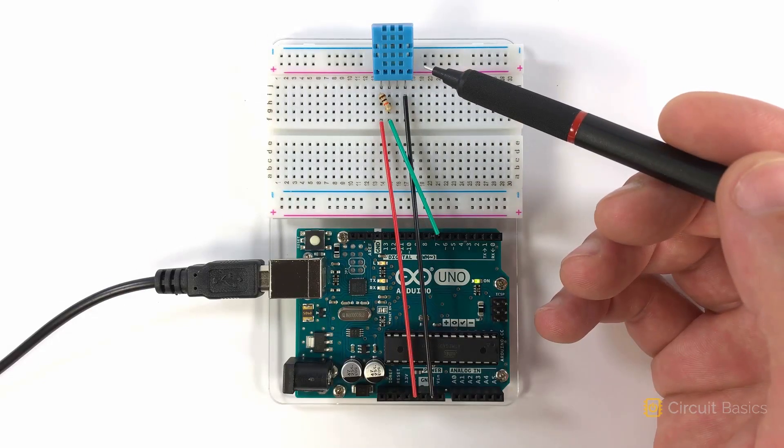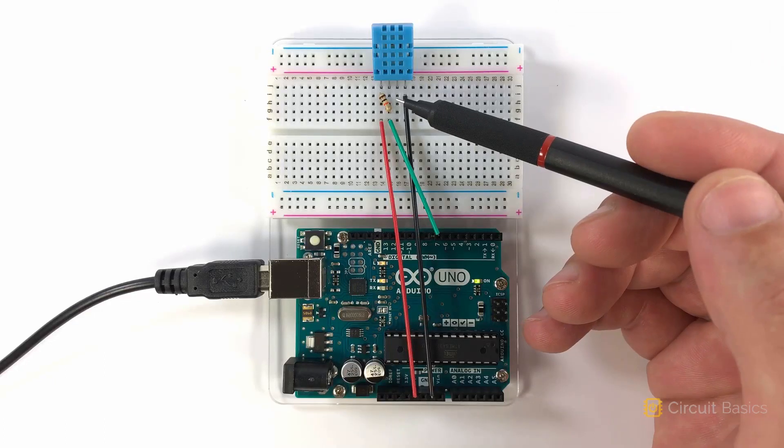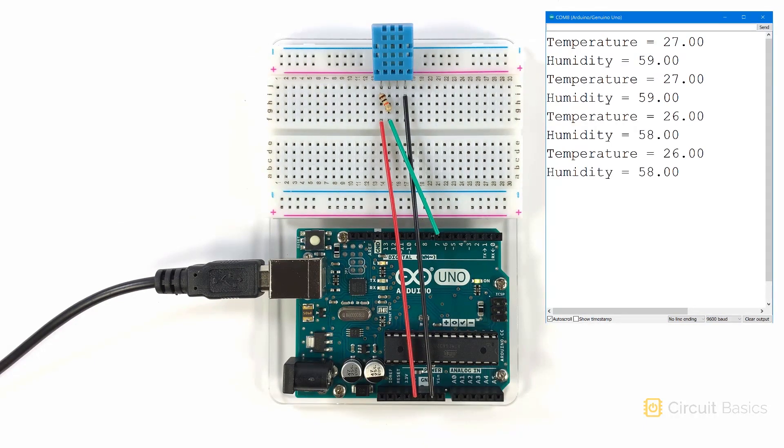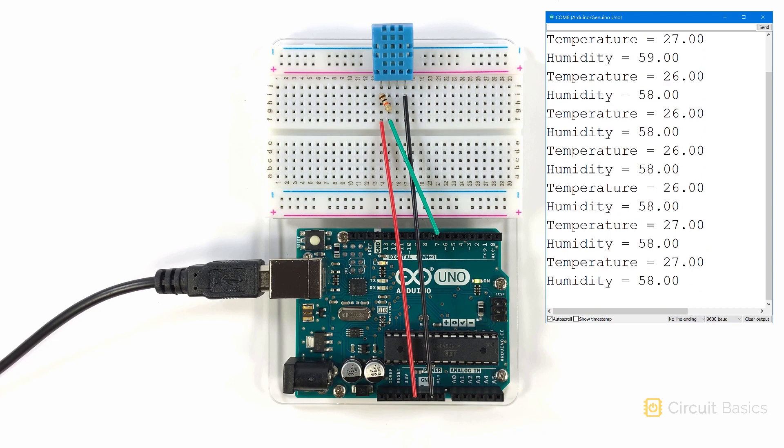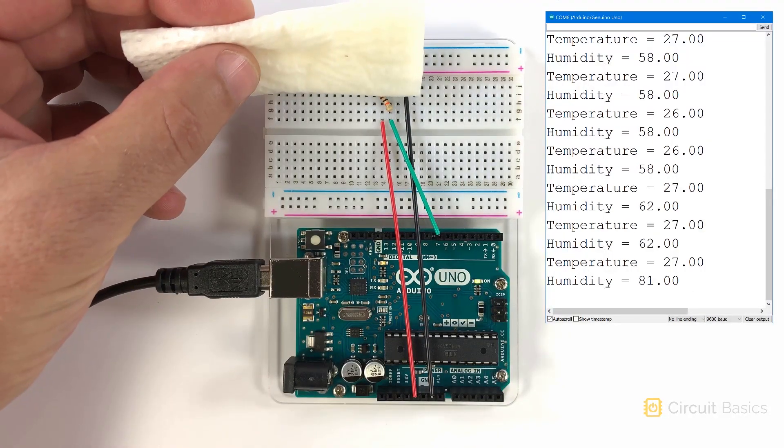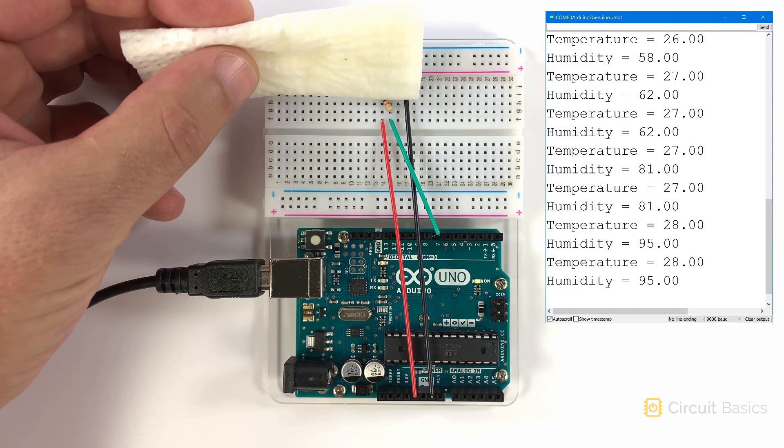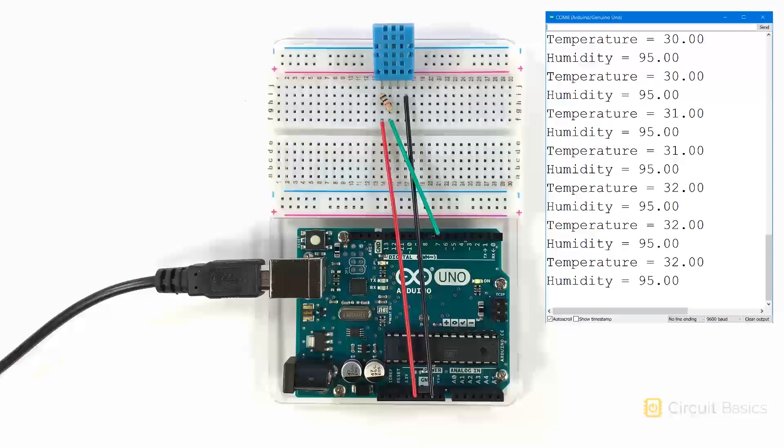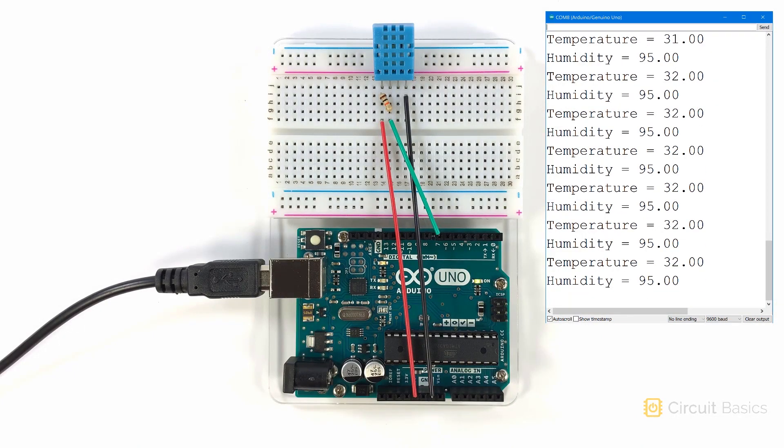So here I have a standalone DHT11 connected to my Arduino. Here's my pull-up resistor. The ambient temperature is reading 26, 27 degrees Celsius, and the ambient humidity is reading 58%. I'm going to place a paper towel that's been moistened with warm water on the sensor. When I remove the paper towel, it takes a while for the humidity and temperature to return to normal. The humidity sensing element is saturated with moisture, and it's going to take some time to dry out. Great, so it's working.